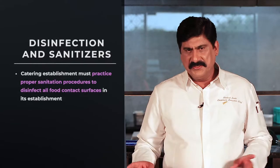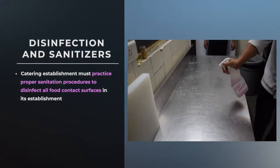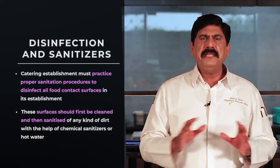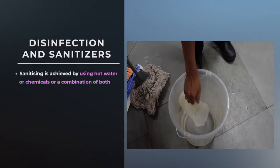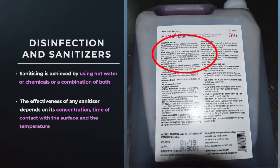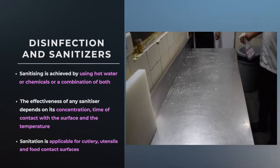Let us now talk about the next step after cleaning — that is disinfection and sanitizers. A catering establishment must practice proper sanitation procedures to disinfect all food contact surfaces. These surfaces should first be cleaned and then sanitized with chemical sanitizers or hot water. Sanitizing is achieved by using hot water, chemicals, or a combination of both. The effectiveness of any sanitizer depends on its concentration, time of contact with the surface, and the temperature. Sanitation is applicable for cutlery, utensils, and food contact surfaces.